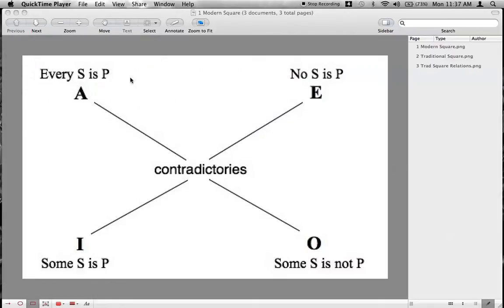Okay, so what I put up here on the board is, first of all, you can see this is the modern square of opposition. You have your four propositions, your A, your E, your I, and your O.